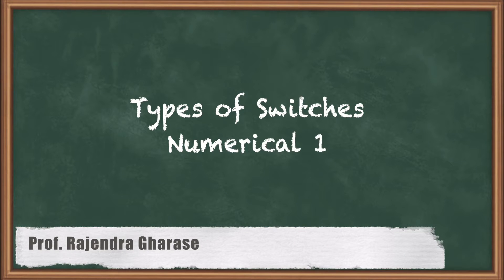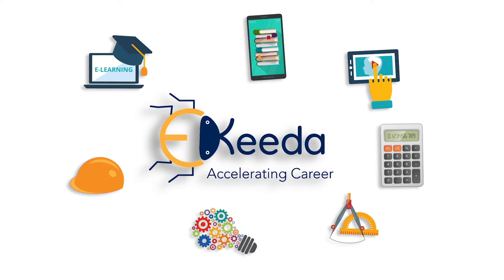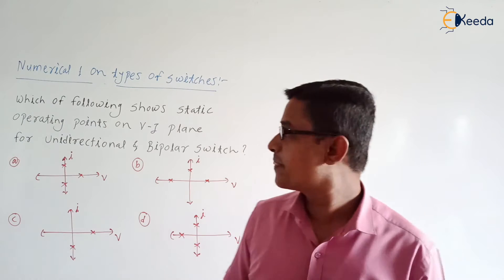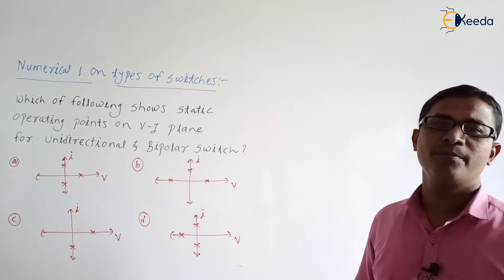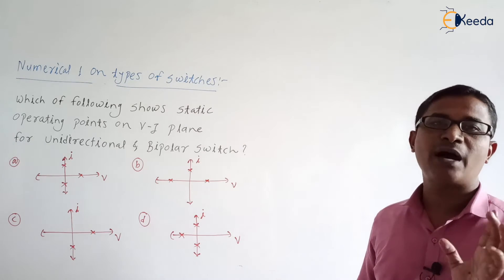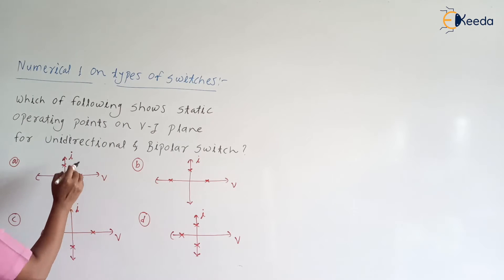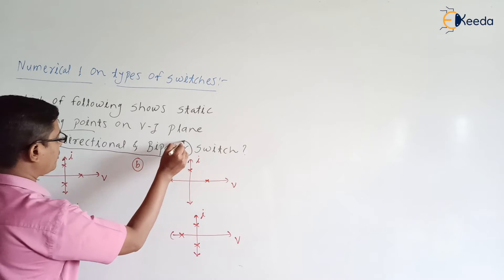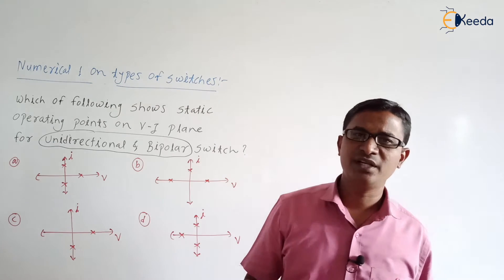Hello friends, in this video we are going to discuss the numerical on types of switches. The question asks: which of the following shows static operating points on the VI plane for a unidirectional and bipolar switch? They have given four options. We need to identify the static operating point on the VI plane for a unidirectional and bipolar switch.